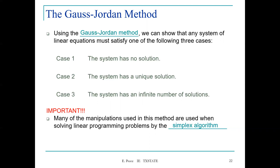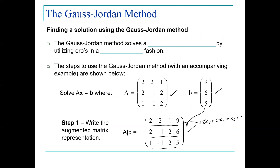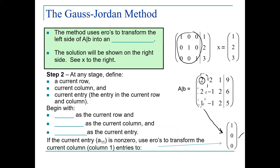One of the algorithms used to solve linear programming models is called the simplex algorithm, and the simplex algorithm uses the Gauss-Jordan method. Last time we discussed the elementary row operations that are part of the Gauss-Jordan method. The idea is to apply these elementary row operations in a systematic way such that we can transform matrix A, which represents the coefficients of the decision variables for our set of linear equations, into an identity matrix.